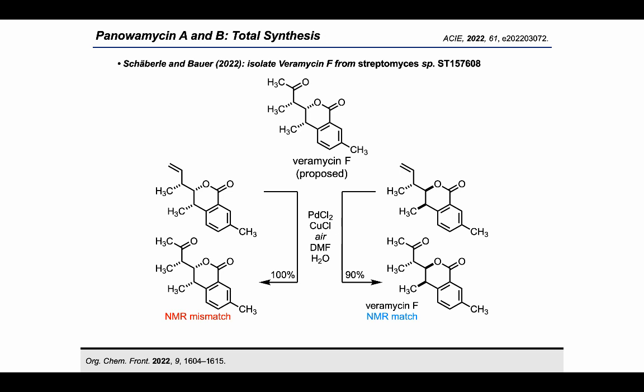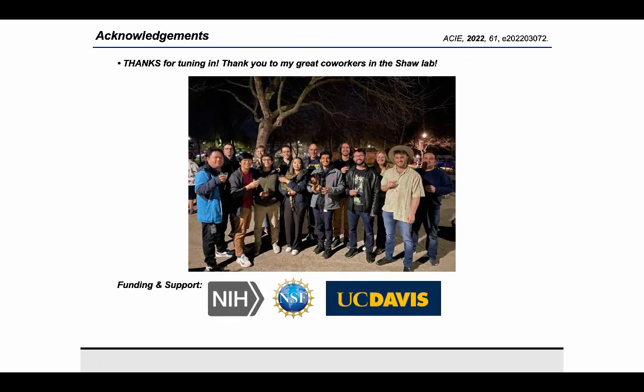In conclusion, we were able to achieve the divergent asymmetric total synthesis of panolamycin A, panolamycin B, TM-135, and varamycin F, featuring a CH-insertion reaction using a donor-donor carbene in the key bond-forming step. Finally, I would like to thank my awesome lab mates and my advisor, Jared Shaw. Thanks for tuning in!